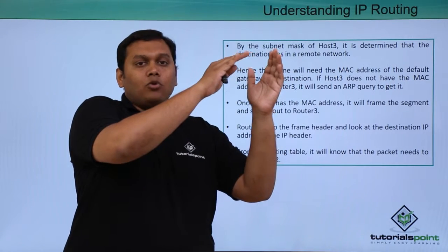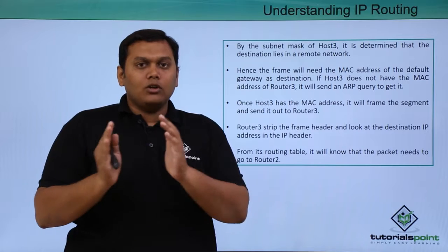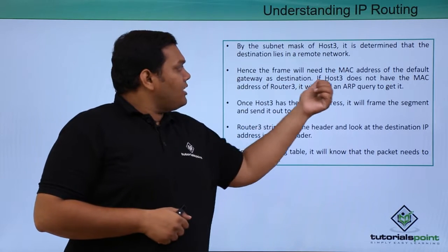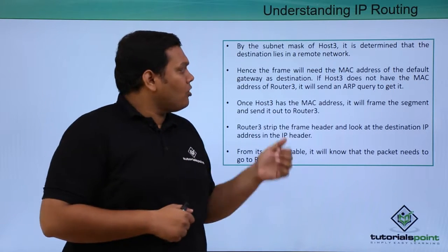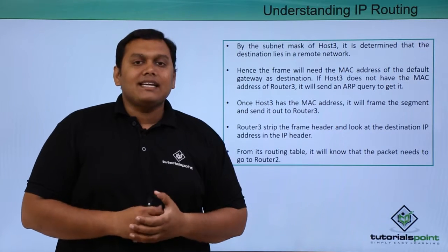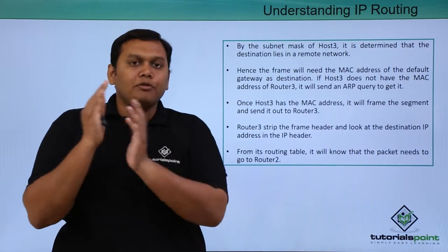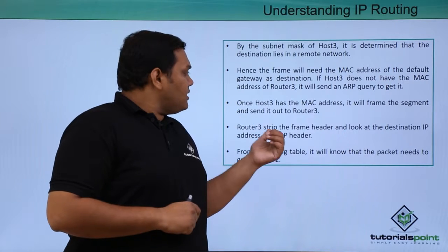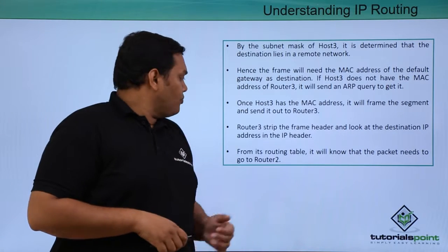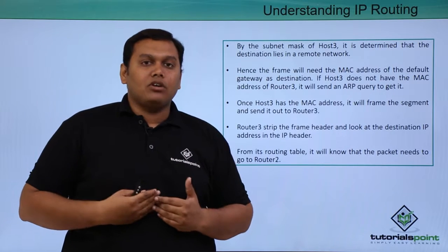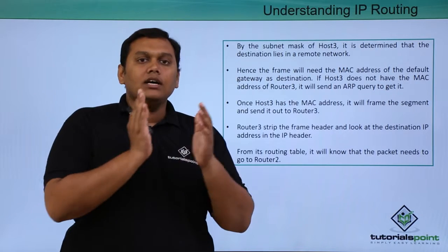The packet travels from Host 1 to Host 3 through Switch 1, Router 1, Router 2, Router 3, and Switch 2 to reach Host 3. The frame needs the MAC address of the default gateway as well as the destination IP address. If Host 3 does not have the MAC address of Router 3, it will send an ARP request again to receive a response with the destination IP address. Router 3 strips the frame header, looks at the destination IP address, and forwards it to Switch 2. The routing table also has information on the best routes, forwarding from Router 2 to Router 3 to Switch 2 to Host 3.